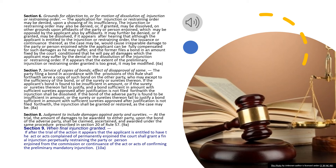The party filing a bond in accordance with the provisions of this rule shall forthwith serve a copy of such bond on the other party, who may except to the sufficiency of the bond, or of the surety or sureties thereon. If the applicant's bond is found to be insufficient in amount, or if the surety or sureties thereon fail to justify, and a bond sufficient in amount with sufficient sureties approved after justification is not filed forthwith, the injunction shall be dissolved. If the bond of the adverse party is found to be insufficient in amount, or the surety or sureties thereon fail to justify, a bond sufficient in amount with sufficient sureties approved after justification is not filed forthwith, the injunction shall be granted or restored, as the case may be.